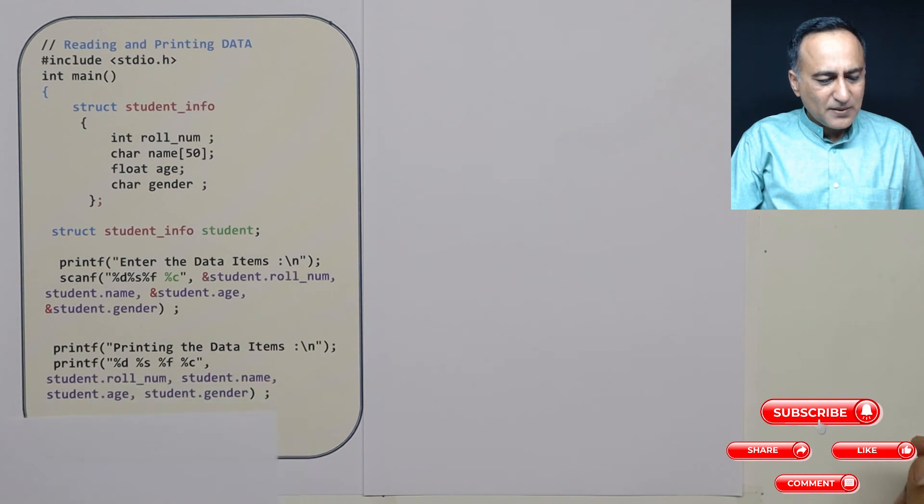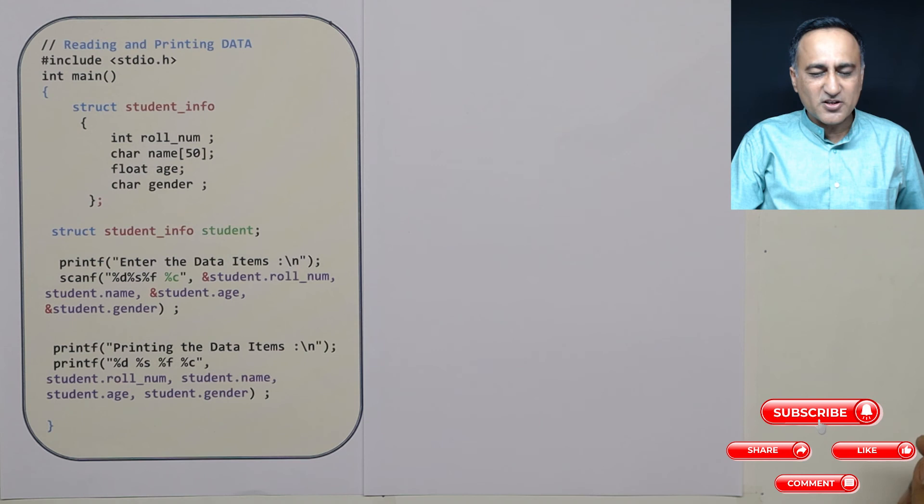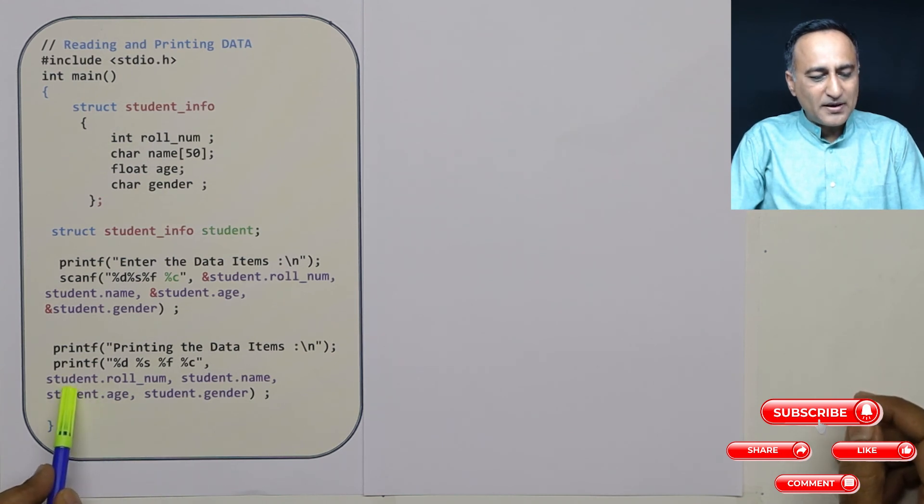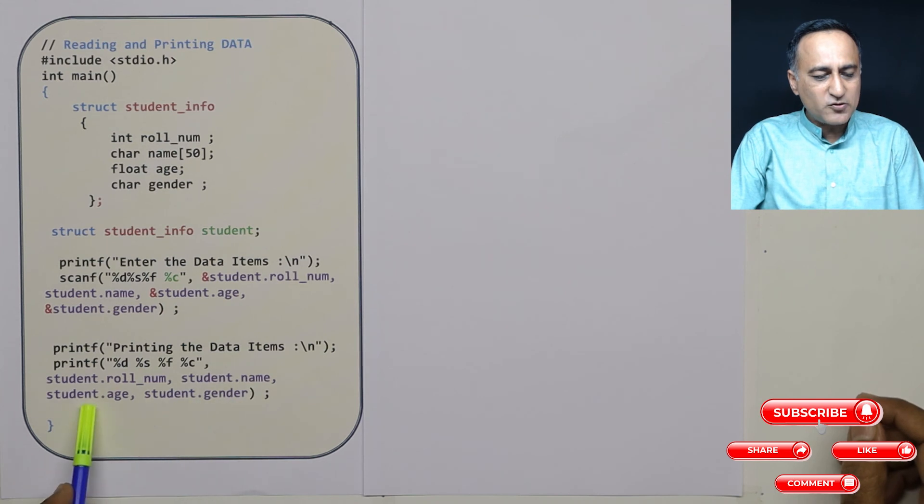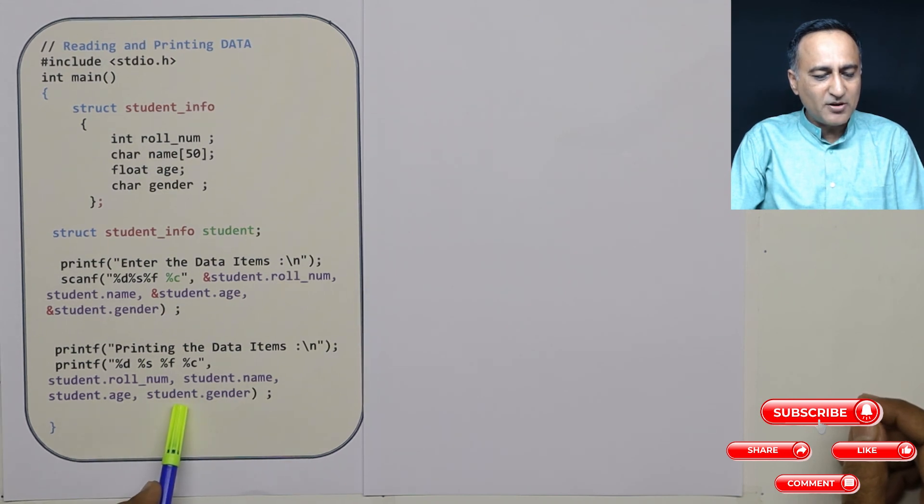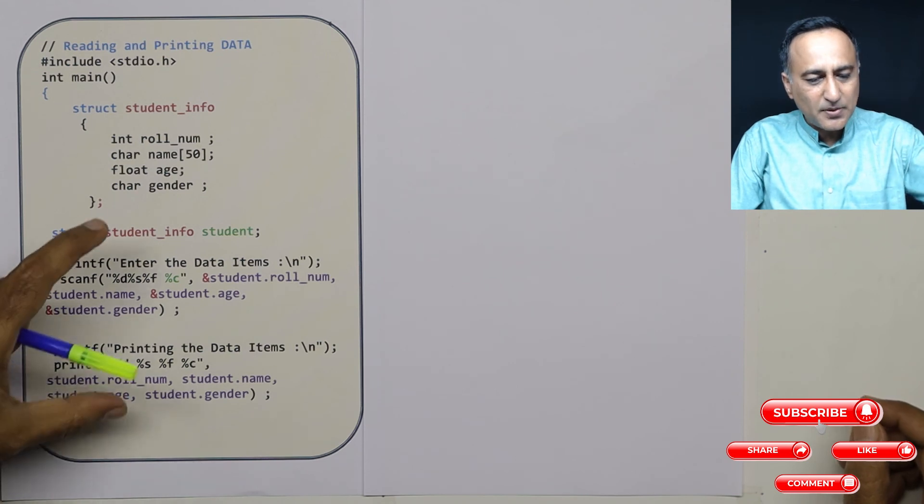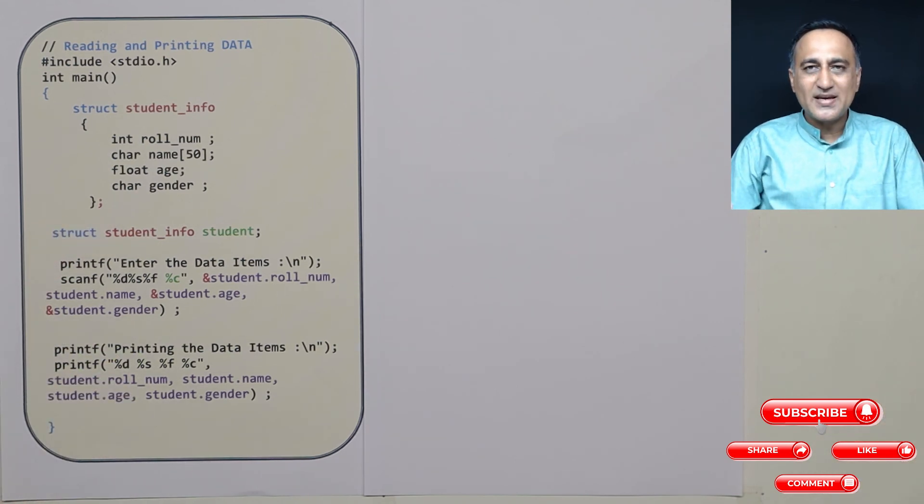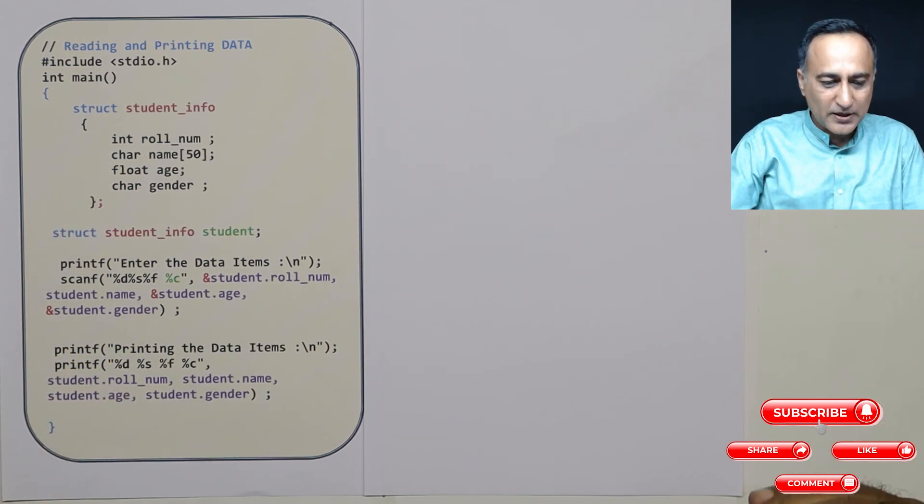Now printing is very easy. There's no difference between printing a structure and printing a normal variable, except that everything has to be prefixed with student. So if I am printing the roll number it will be student.roll_num, name will be student.name, age will be student.age, gender will be student.gender. This simple program will also be shown as a demo following this video.